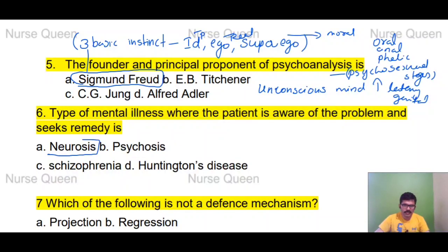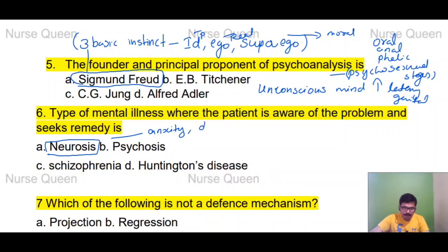In neurosis, the patient is aware of his own problem. Neurosis includes examples such as anxiety, depression, OCD, bulimia nervosa, and other eating disorders.